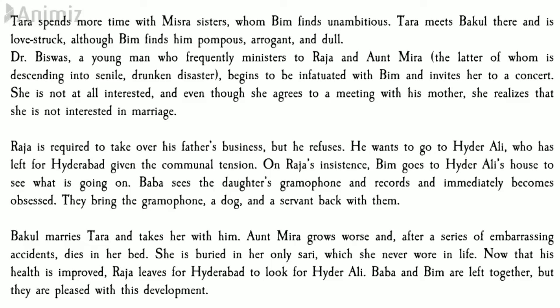By the end of Part Two, Tara is getting married to Bakul and they move out of Old Delhi. Raja, asked to take care of the family business, refused — he wanted to go to Hyderabad to look for Hyder Ali and his family. This left Vimla and Baba alone in the house in Old Delhi. They were not very upset with this because they were contented with each other. Vimla had already decided she would never marry and accepted the responsibility of taking care of her younger brother Baba, who is mentally retarded.